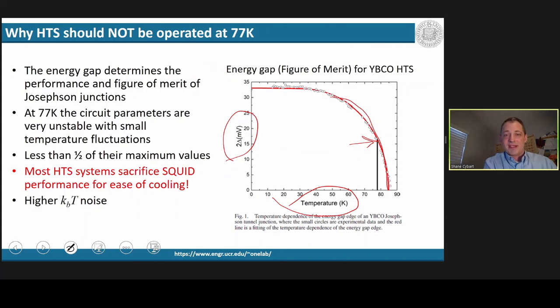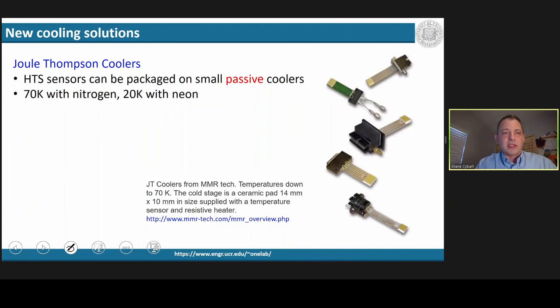Furthermore, at 77 Kelvin, you'll see that this line, which represents the critical current or the amount of super current in the squid, is more than half. So you're actually sacrificing squid performance for the ease of cooling. And it should be the other way around. Also at higher temperature, you have higher kVT noise. So to get to these smaller temperatures, there's other solutions that are available.